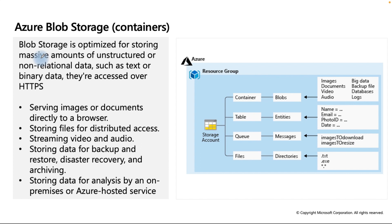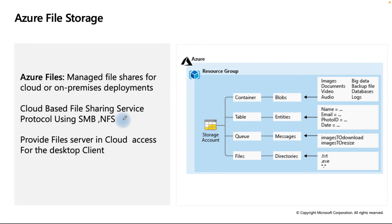Azure Blob Storage offers unstructured data storage in the cloud. It can store all kinds of data such as documents, images, and audio files. Use cases include streaming video and audio, storing backups and disaster recovery data, and storing data for analysis by on-premises or Azure-hosted services.